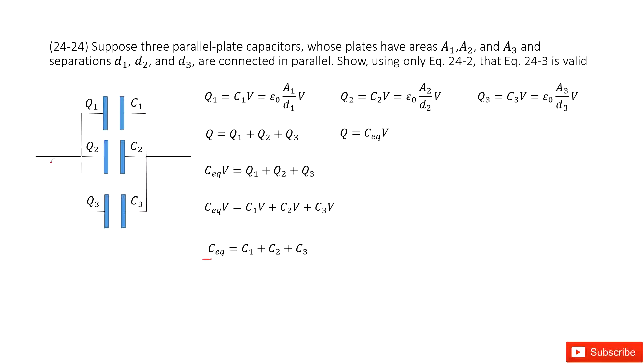We can consider this is a parallel connection. The charge at this main branch is Q. This charge is separated into Q1, Q2, Q3. By charge conservation, we can see Q equals Q1 plus Q2 plus Q3.